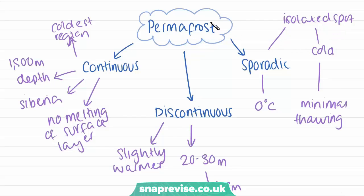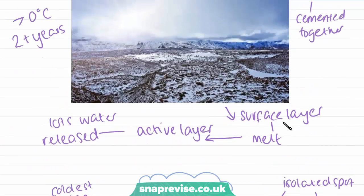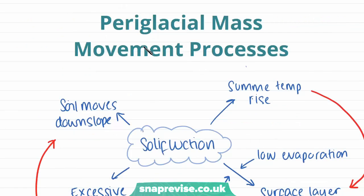To clarify: permafrost is permanently frozen ground. It might seem confusing that the surface layer melts, but the layers underneath remain frozen — that's why it's permafrost. Only the surface layer melts during summer. Moving on, we're going to look at periglacial mass movement processes, starting with solifluction.